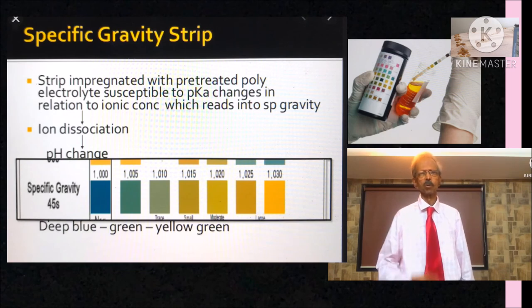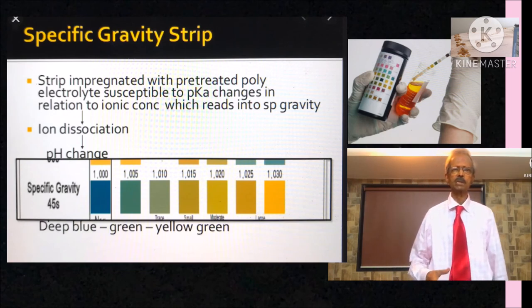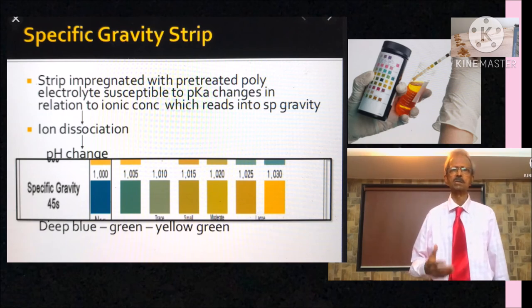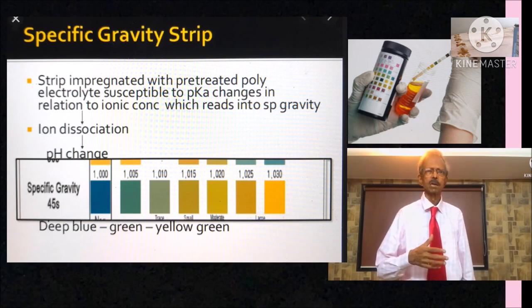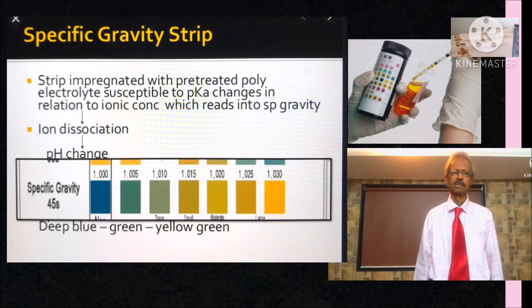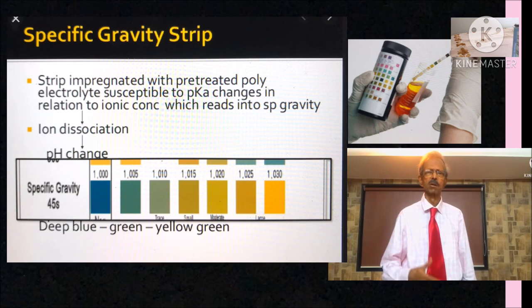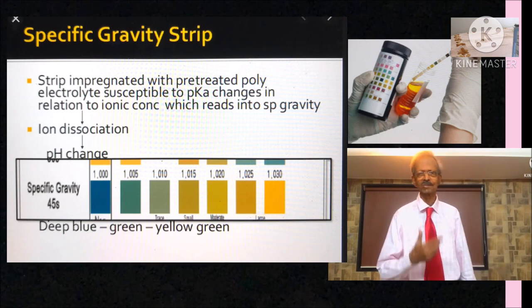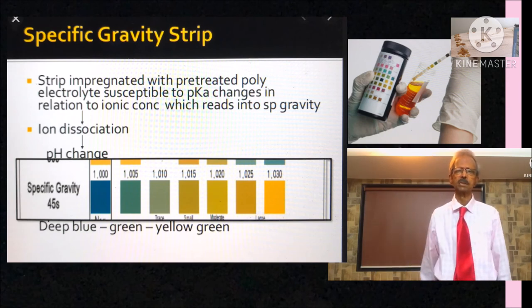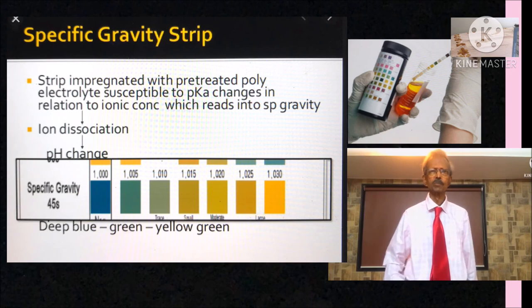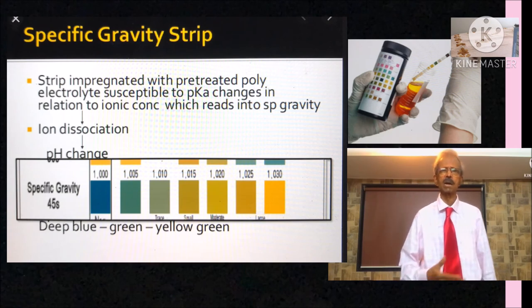For specific gravity, the reaction area contains pre-treated poly electrolytes and bromothymol blue. When the strip is dipped in urine, depending upon the concentration of ions in the urine which indicate a higher specific gravity, the poly electrolytes dissociate. And then the bromothymol blue changes the color. Higher the specific gravity of the urine specimen, more acidic is the reagent area. And the color of the reagent area ranges from deep blue-green to yellow-orange for higher ionic concentrations.